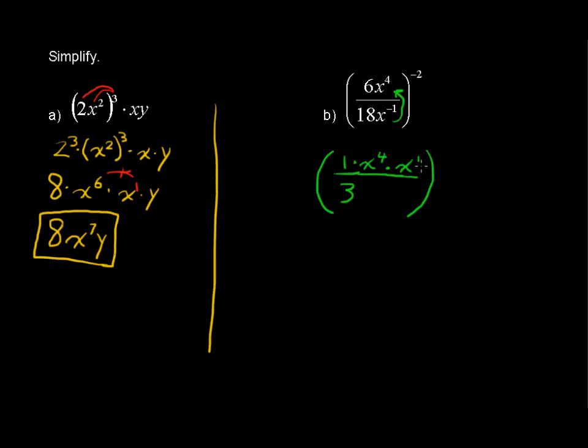This is all still raised to the negative 2. Now this 1 times, 1 times anything is just that anything, so I won't write that again. We'll play this trick again. When you multiply like bases, you add the exponents. So we'll add the 4 and the 1. So now we have x to the 5th over 3, all raised to the negative 2.